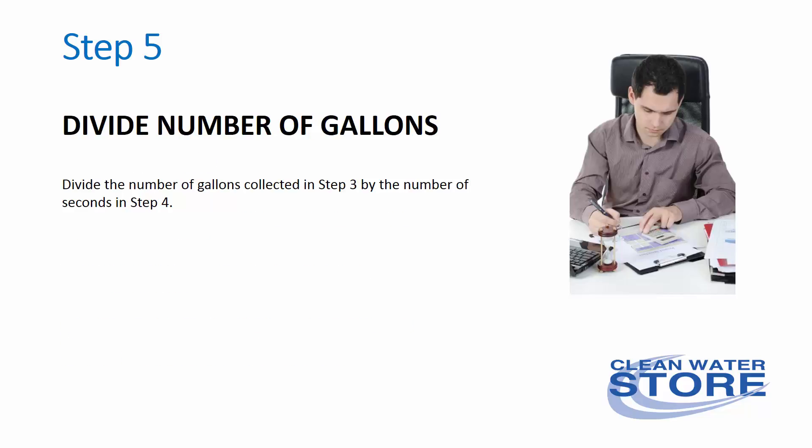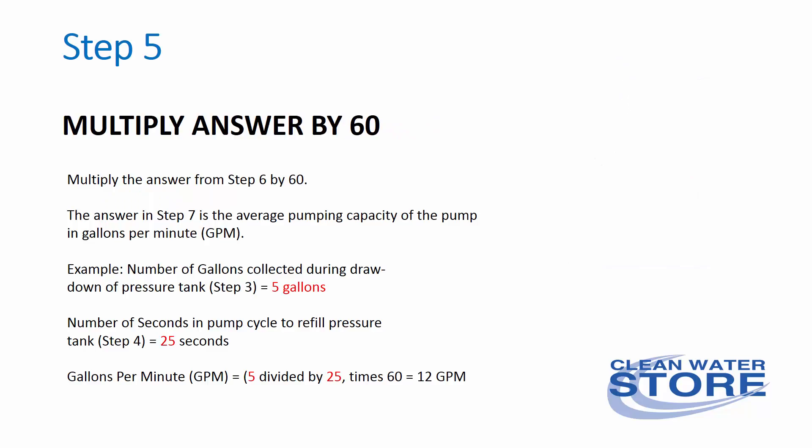Divide the number of gallons collected in Step 3 by the number of seconds in Step 4. Then multiply that answer by 60, and the result is the average pump capacity of your pump in gallons per minute.